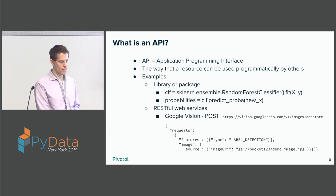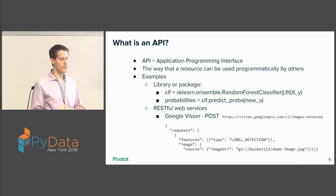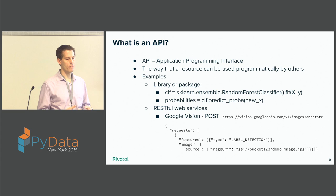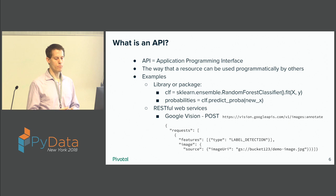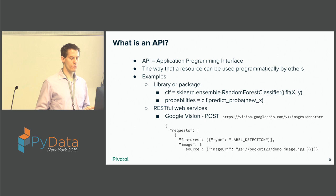An API is an application programming interface. If you have a resource that you want others to be able to programmatically use, that interface is an API. There's kind of a spectrum: you could have it just be a library or a package, like scikit-learn, where you're using it within the same language, probably even on the same machine. Or on the other end, you could have a RESTful web service, like the Google Vision API or a variety of the APIs we hear about, and in those cases it's HTTP POST and GET requests sent over, and you get answers back.